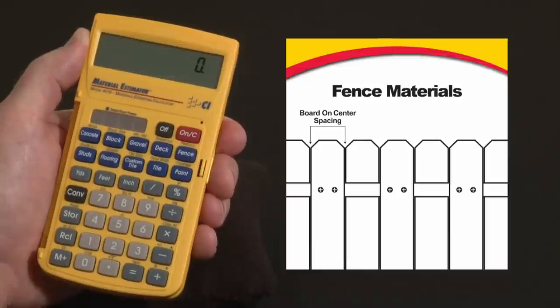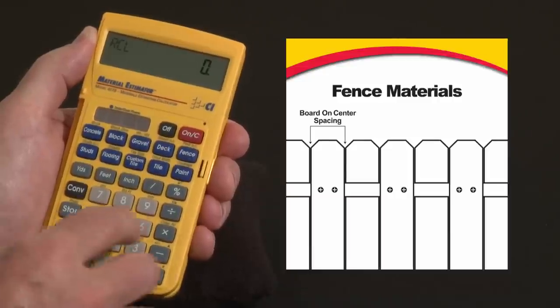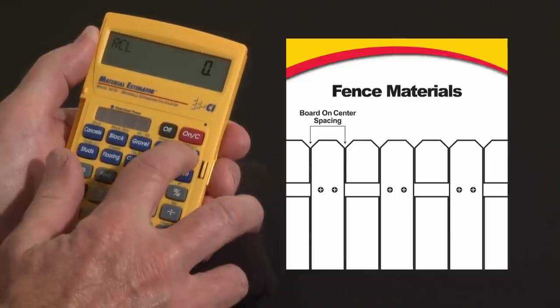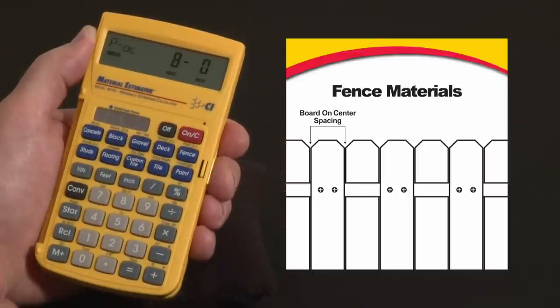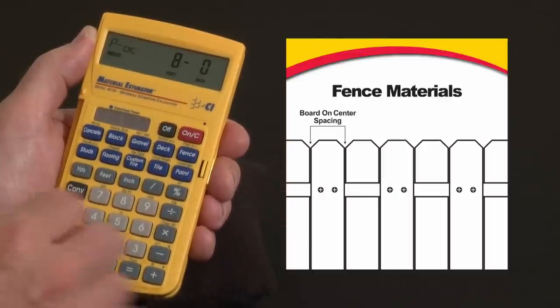First, to check your default settings, hit recall fence. Above the fence key it says post on center. We have it set for eight foot on center. You can change that to whatever you want, but for this example we'll leave it at that.